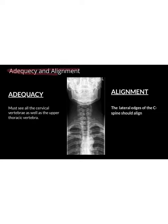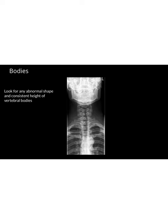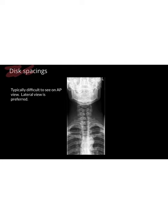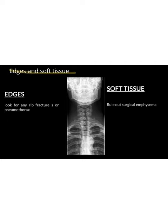On the AP view, adequacy dictates that all cervical vertebrae must be seen, as well as the upper thoracic vertebrae. Alignment dictates that the lateral edges of the cervical spine are in line. For bodies, we're looking for any deformities of the vertebral bodies. For cortical outline, we look for fractures, though this is typically difficult to see on AP view. Disc spacing looks at spacing between each vertebra. For edges and soft tissue, we look for rib fractures, any pneumothorax in the apices, and surgical emphysema.